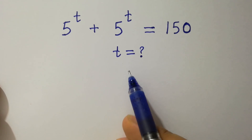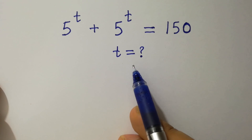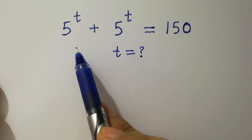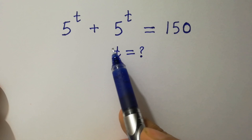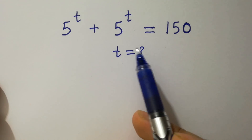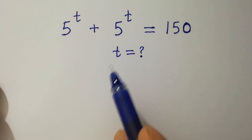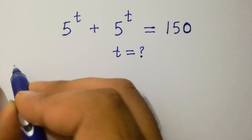Hello friends. Find the value of t if 5 to the power t plus 5 to the power t equals 150. Let's have a solution.